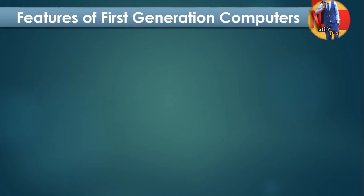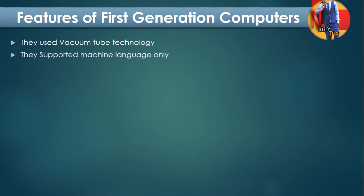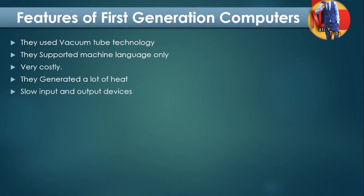The features of the first generation computer are: they used vacuum tube technology; they supported machine language only, which is ones and zeros; they were very costly; they generated a lot of heat; input and output devices were slow; and they were huge in size — not portable at all.